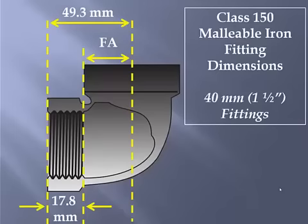What the pipe trades worker will be required to calculate is the fitting allowance when given the face-to-center and thread engagement for any specific fitting. Once you subtract the thread engagement from the face-to-center dimension, the result will be the fitting allowance. In this case, 31.5 millimeters.